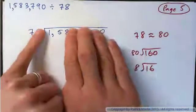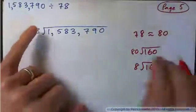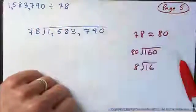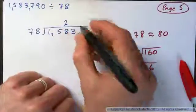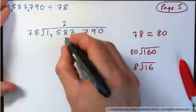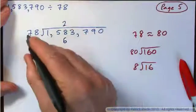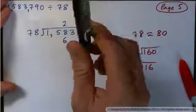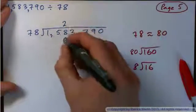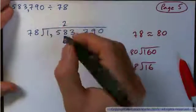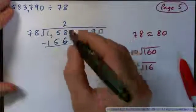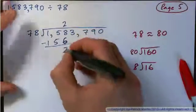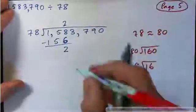Or you could just think: what's 7 into 15? That goes about twice. So guess 78 into 158 is about 2 times. 2 times 8 is 16, put down 6 and carry 1. 2 times 7 is 14, and 1 is 15. Subtract — we get a remainder of 2, which is less than 78, so that's fine. Now bring the 3 down and we have 23.